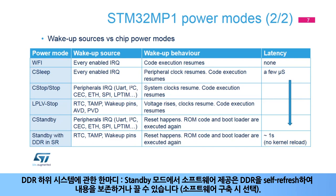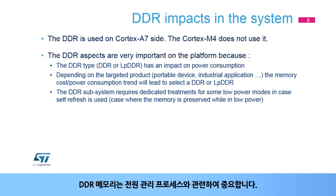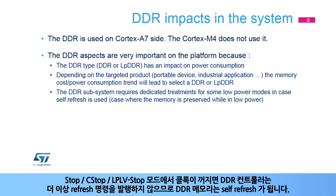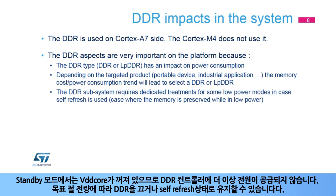A word on the DDR subsystem. In Standby mode, the software deliveries offer the possibility to put the DDR in self-refresh to preserve its content or to switch it off — this is selected at software build time. The STM32MP1 microprocessor supports DDR3, LPDDR2, and LPDDR3 memory types. In Stop, C-Stop, and LPLV-Stop modes, as the clocks are off, the DDR controller does not issue refresh orders anymore, so the DDR memory is put in self-refresh. In Standby mode, VDD-Core is off, so the DDR controller is not powered anymore; depending on the targeted power saving amount, it is possible to switch the DDR off or to keep it in self-refresh.